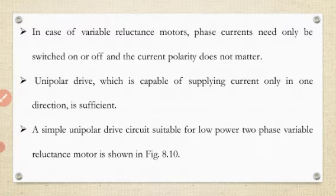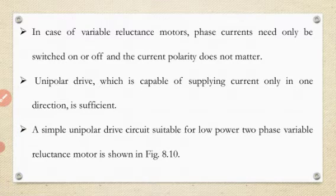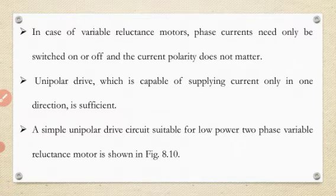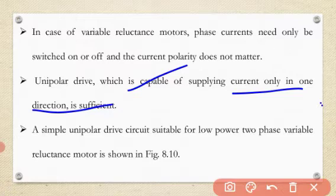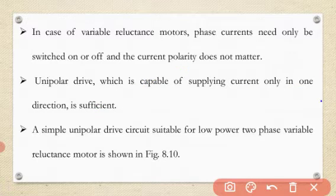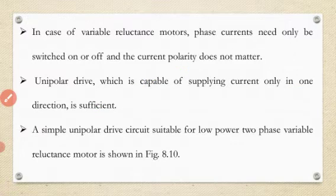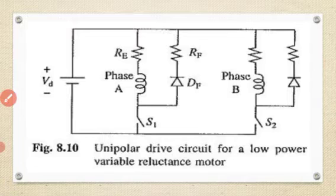In the case of a variable reluctance motor, phase currents need only be switched on or off, and the current polarity does not matter. A unipolar drive, which is capable of supplying current only in one direction — as the name indicates — is sufficient. A simple unipolar drive circuit suitable for a low power two-phase variable reluctance motor is shown in the next figure.